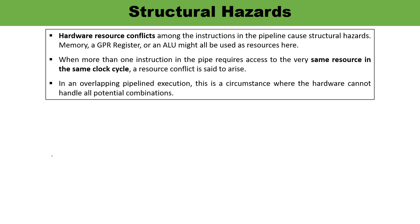First is the structural hazard. As I mentioned, there might be conflicts among resource requirements. The resources may be memory, general-purpose registers, or the ALU. If the same resource is required by two instructions simultaneously, that will cause a problem falling into the category of structural hazard. When more than one instruction in the pipeline requires the same resource in the same clock cycle, there will be a conflict — that is the structural hazard.